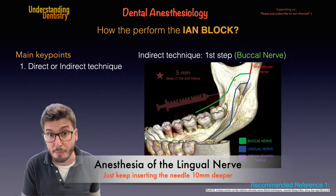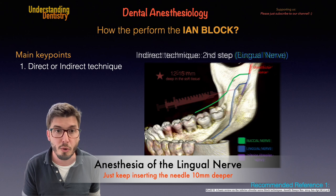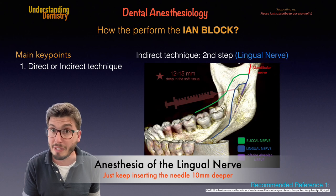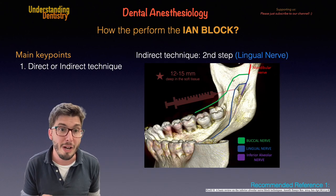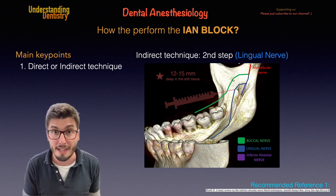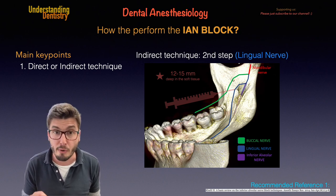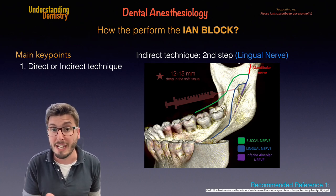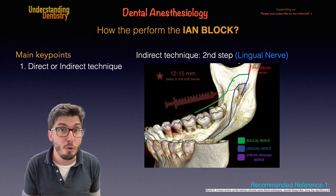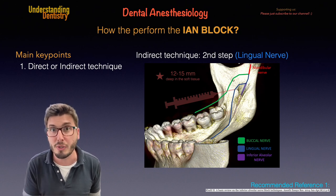The second step: we keep going in the same direction, inserting the needle ten more millimeters, so from 12 to 15 millimeters will be the total penetration depth of the needle, and then we are going for the lingual nerve. For those two nerves we don't need to deviate from the lingula of the mandible — it's the same direction, always parallel to the dental arch of the same side.